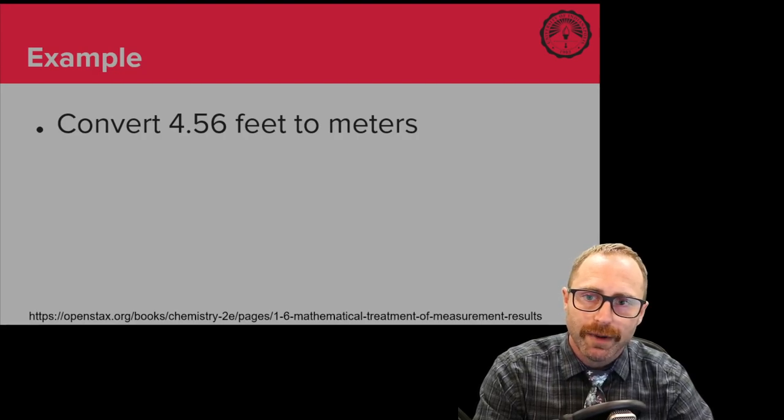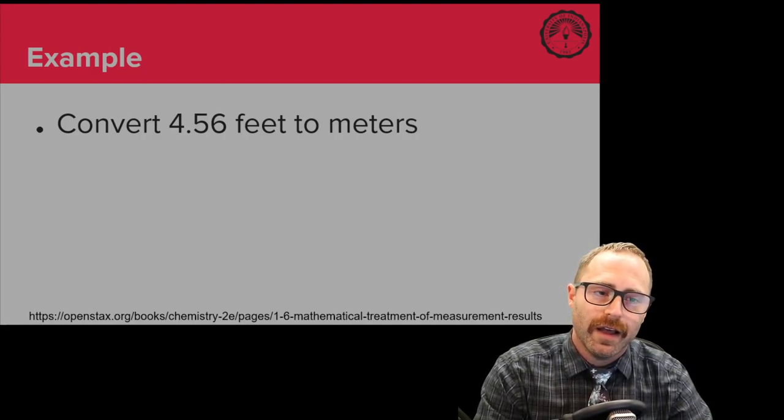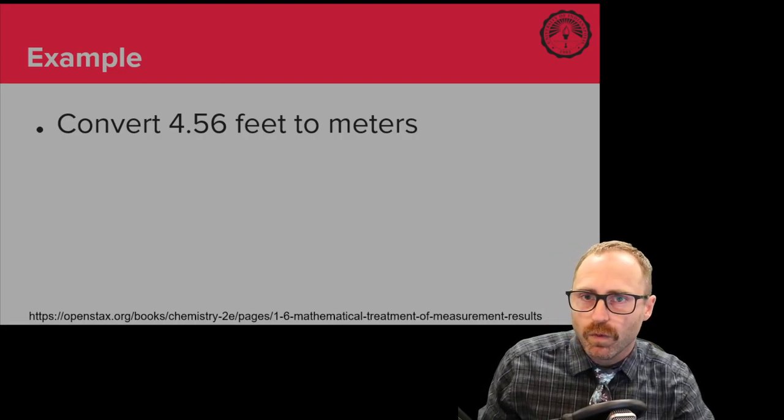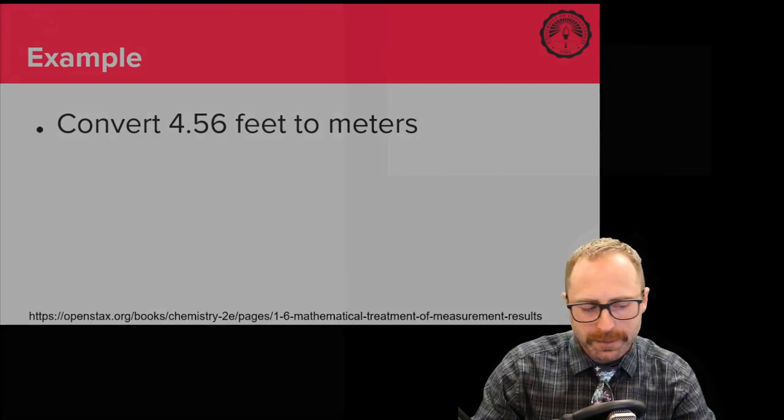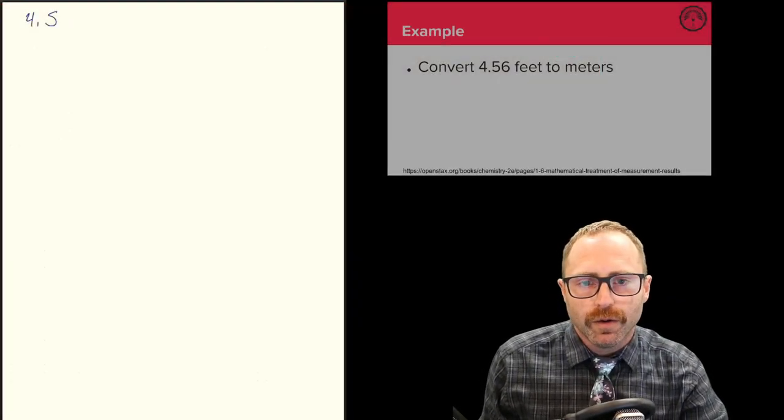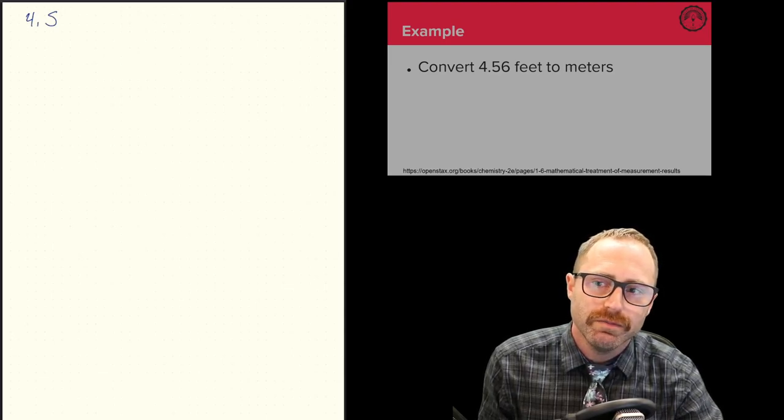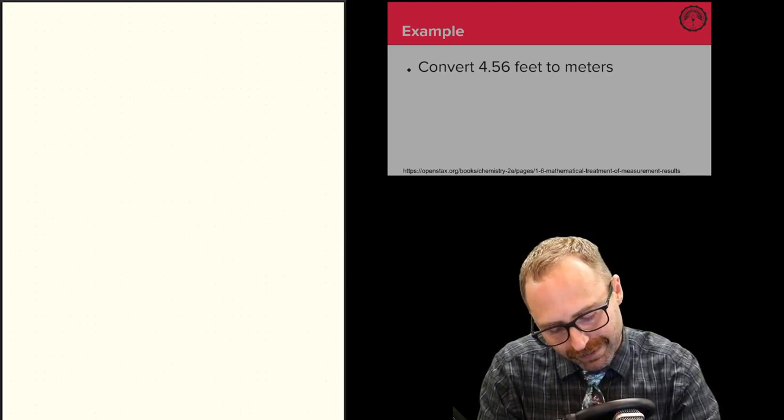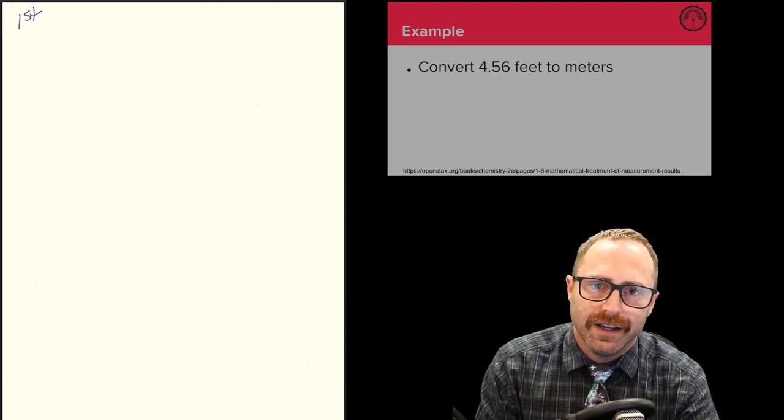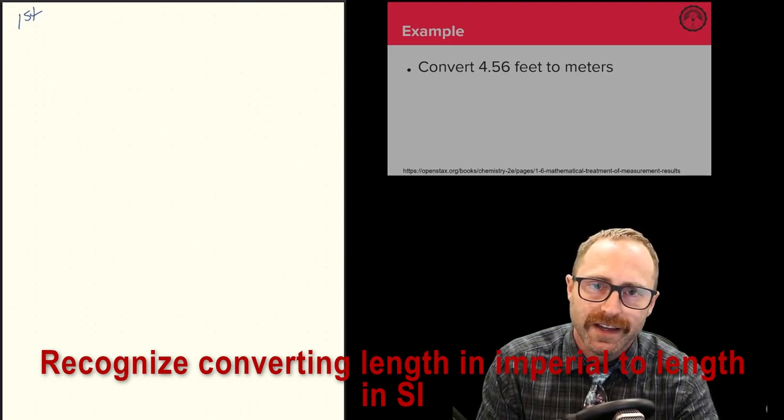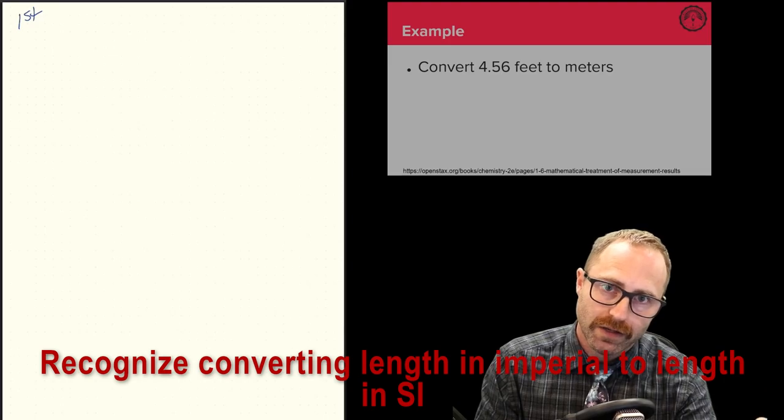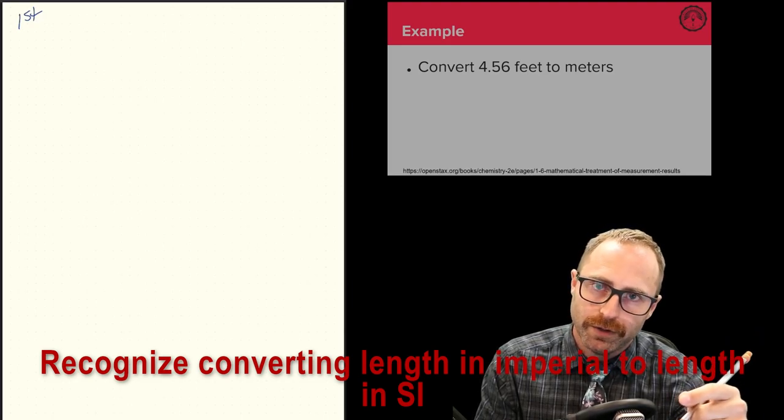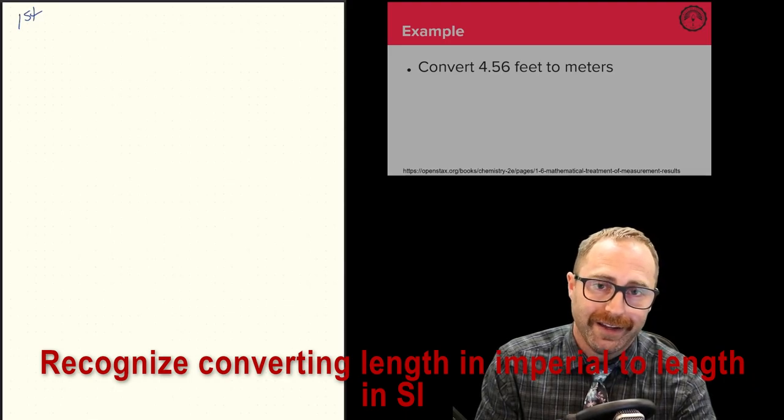So now that we've talked about these conversion factors, we've said that dimensional analysis, the factor label method is a mathematical relationship. Let's actually use this in practice and let's walk you through how to think about one of these questions. So here we go. The question is convert 4.56 feet to meters. So the first thing, the first thing we should really do is identify what is the question asking us. And the question is really asking us to convert feet, which is an imperial unit into meters, which is an SI unit.